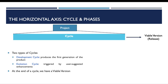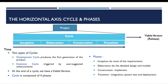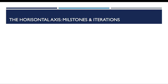The result of a cycle is a viable version or a release. A cycle is composed of four phases: the inception phase, the elaboration phase, the construction phase, and the transition phase. During inception, most requirements are gathered. During elaboration, we detail the design and model the system. During construction we implement the final product, and during transition we integrate, test, and deploy the viable version.